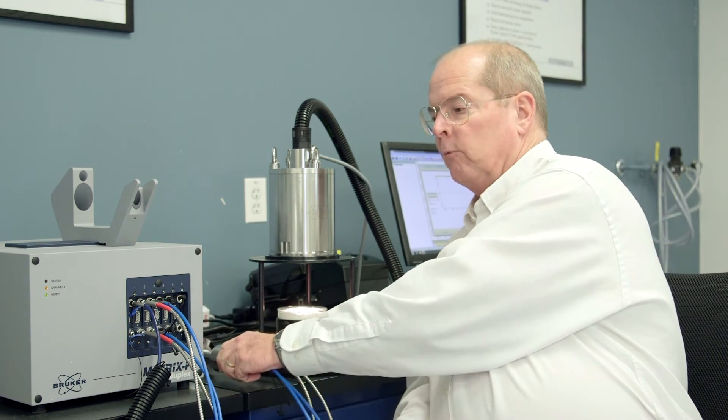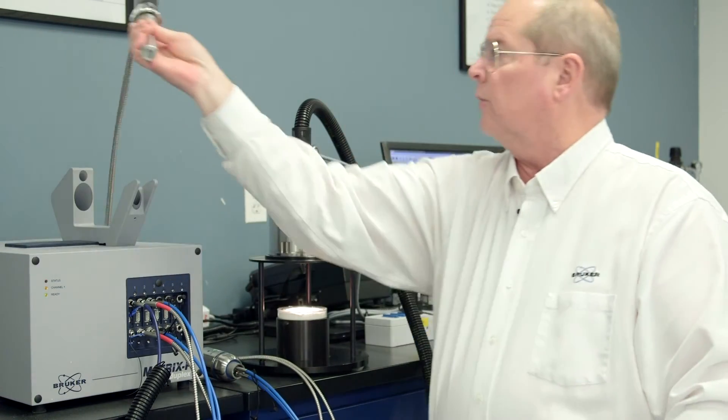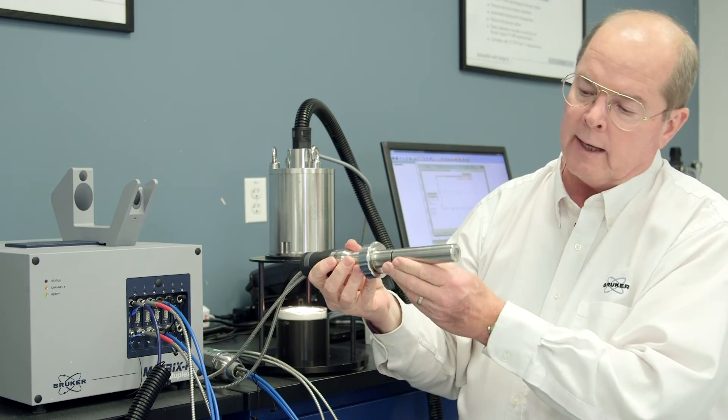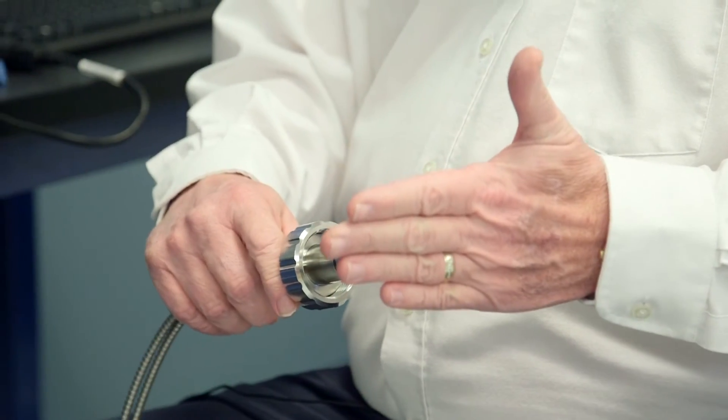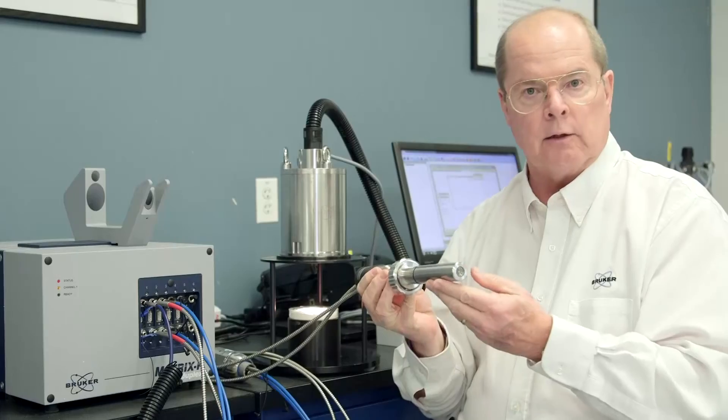Other types of probes which can be used with the Matrix F include standard reflectance probes like this one from Helma Analytics. This probe actually has multiple fibers for the illumination of the sample and for pickup of the reflected light signal.